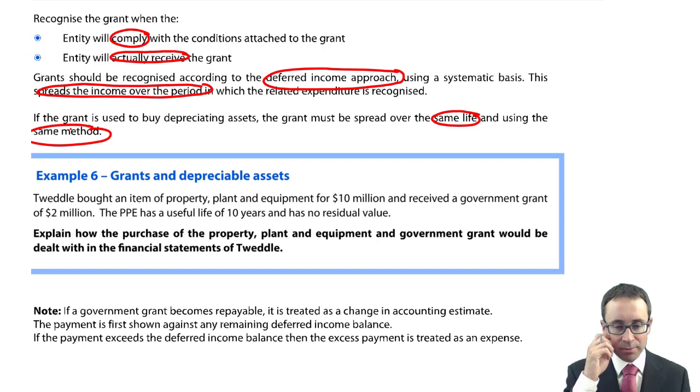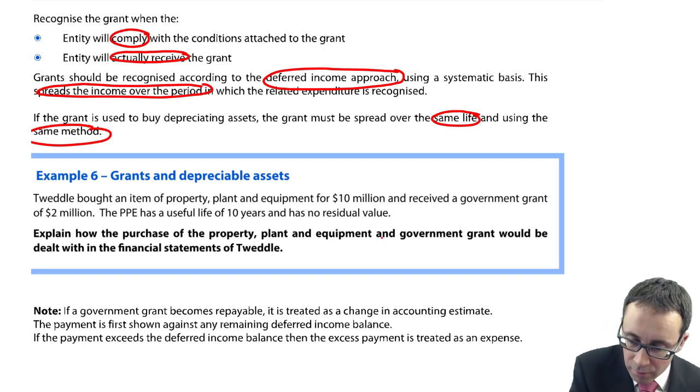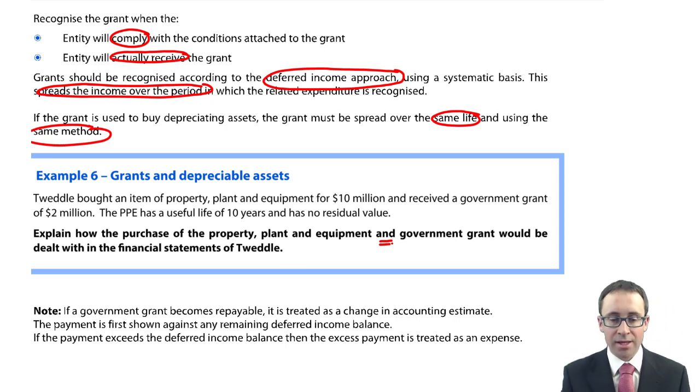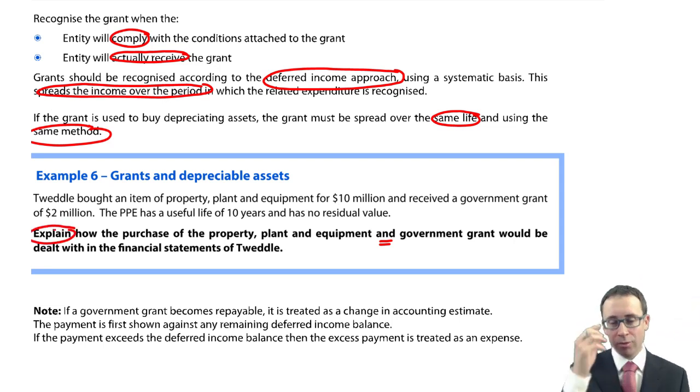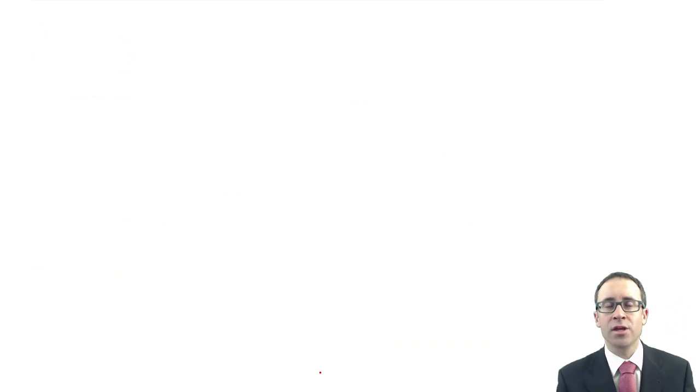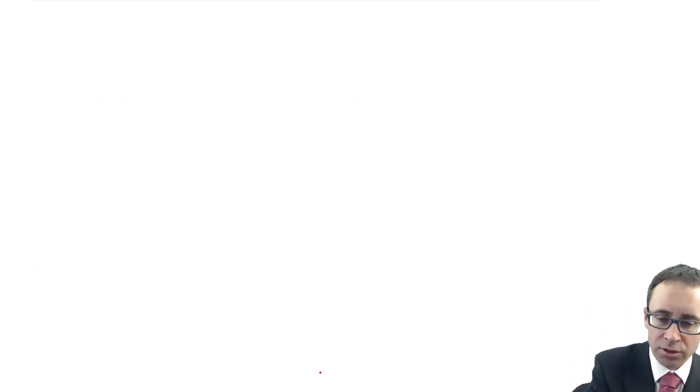So it says that in number six, explain how the purchase of property, plant and equipment and the government grant will be dealt with in the financial statements of Tweedle. So it does say to explain. So we're starting to bring in, if you like, more of the discursive aspect that you see within P2. So it asks us to talk about the PPE and the government grant.